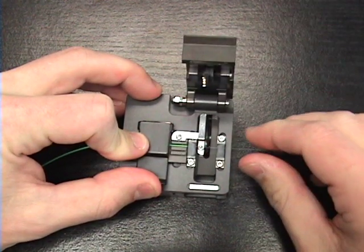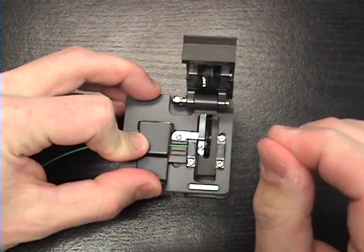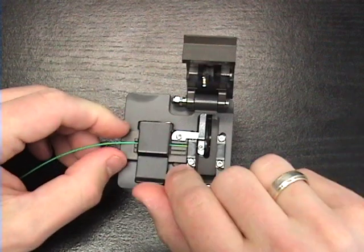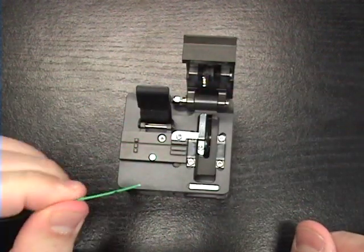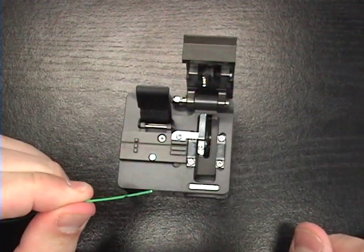When you open the right flap, you can take the fiber shard and throw it away in a trash can. And you now have a prepared fiber that is ready to insert into the connector.